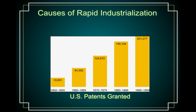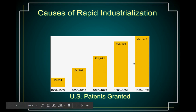Continuing with causes of rapid industrialization — you may have heard of patents. If you invent something new, you can file a patent inquiry with the government, which prevents anyone else from copying your design. At this time there were lots of new inventions, and many patents were filed. As you can see from this chart, from 1850 to 1900, two hundred and twenty-one thousand patents were filed with the US government.